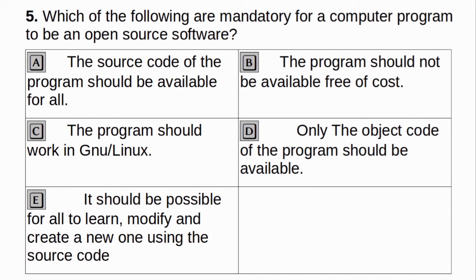Which of the following are mandatory for a computer program to be an open source software? a. The source code of the program should be available for all. b. The program should not be available free of cost. c. The program should work in GNU Linux. d. Only the object code of the program should be available. e. It should be possible for all to learn, modify, and create a new one using the source code. Answer: a and e.